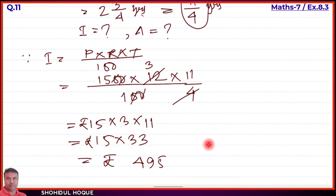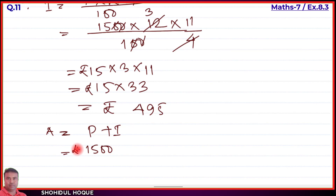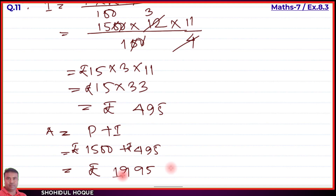Now finding the total amount using the formula: A = P + I = 1,500 + 495 = rupees 1,995. So the interest is rupees 495 and the total amount is rupees 1,995.